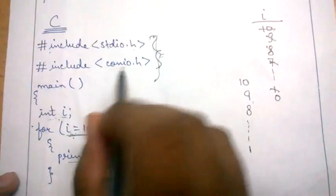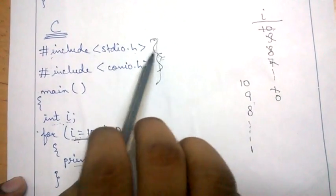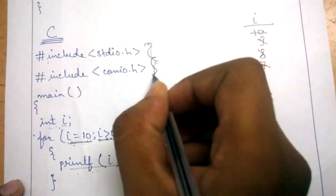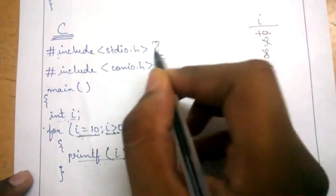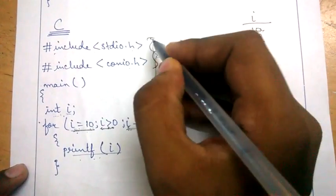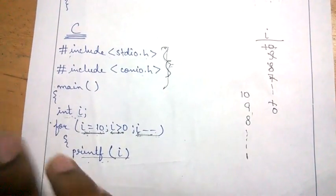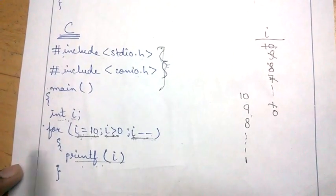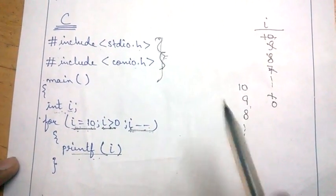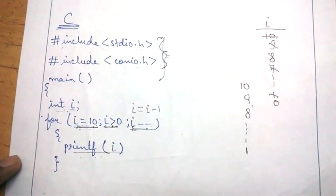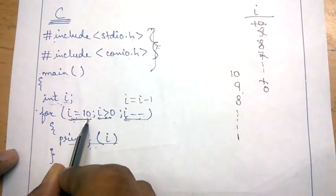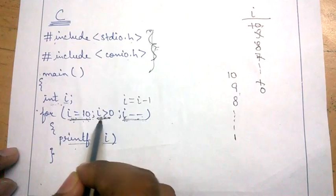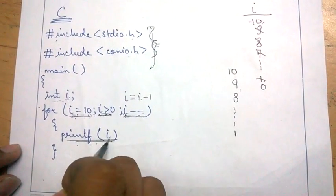Now I am going to show you how to write the same program in C. In C we start with #include stdio.h and #include conio.h. These are the input/output libraries — libraries contain some predefined functions which we are going to use in the program. This is the main function, similar to Java — it will be executed first. i is an integer type variable. The loop is: for i equal to 10, i greater than 0, i minus minus. i minus minus is similar to i minus 1.